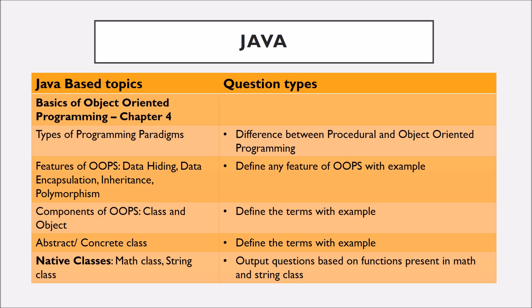Components of OOP, that is class and object, abstract and concrete class and native classes like math or string class. Please learn the definition of all the terms with examples. And in the case of math and string class, output questions based on functions can come.